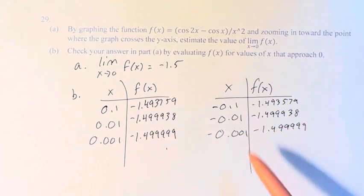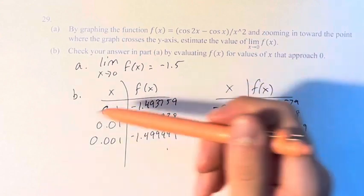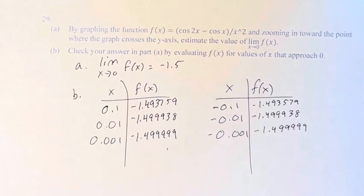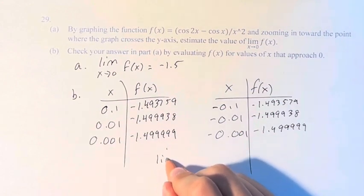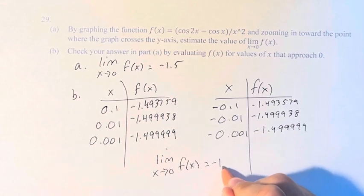So not only are these both approaching negative 1.5, but in fact, they're actually exactly equal to their negative counterparts. Not that that actually matters. The limit is the same either way. The limit as x approaches zero of f(x) is equal to negative 1.5.